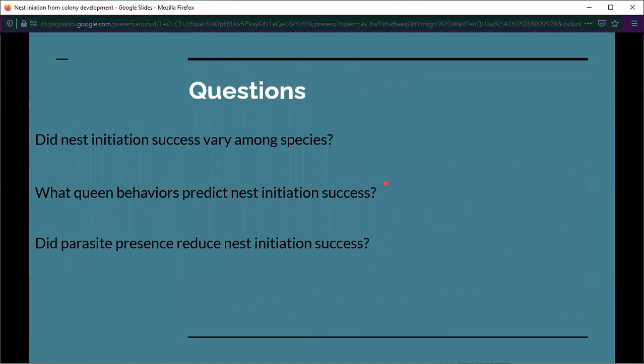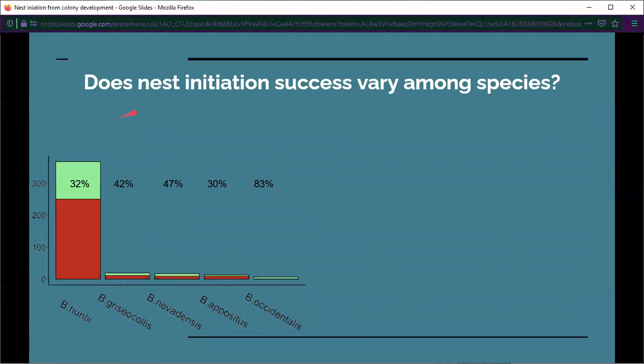From this, we wanted to ask three questions. First, did nest initiation success vary among the five species that we collected? Secondly, what queen behaviors predict nest initiation success? And thirdly, did parasite presence reduce nest initiation success? So the first question, does nest initiation success vary among species?